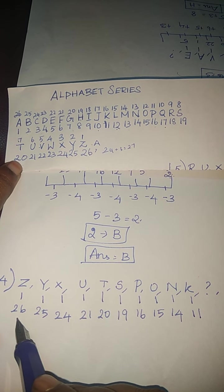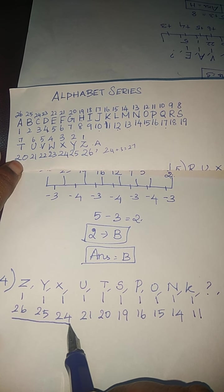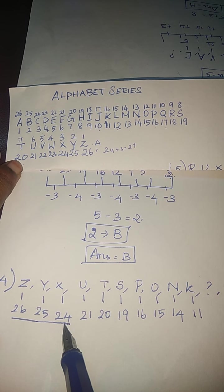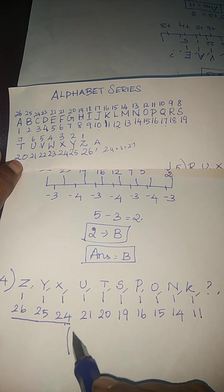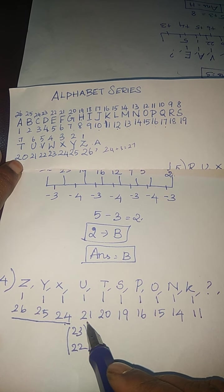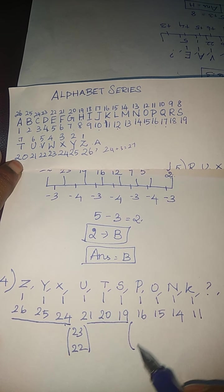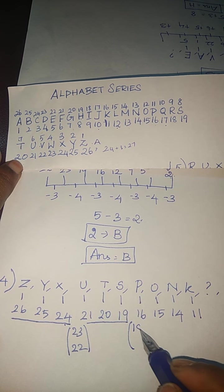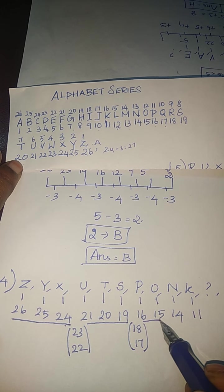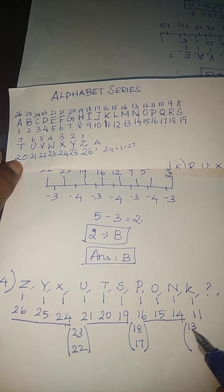See, here, these numbers are in descending order. 26, 25, 24 and they leave the number 23, 22. Then again starts with 21, 20, 19 and then again they leave the number 18, 17. Then again starts with 16, 15, 14 and they leave the number 13, 12.